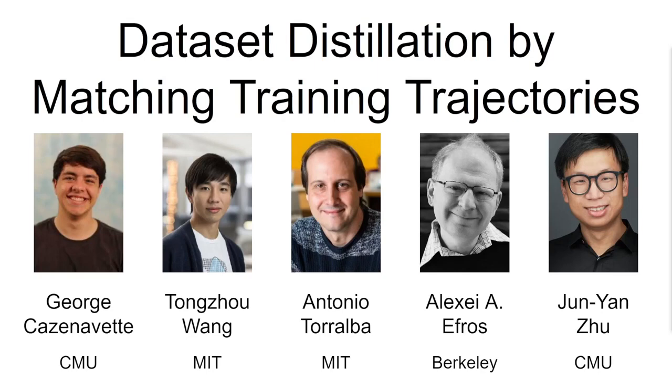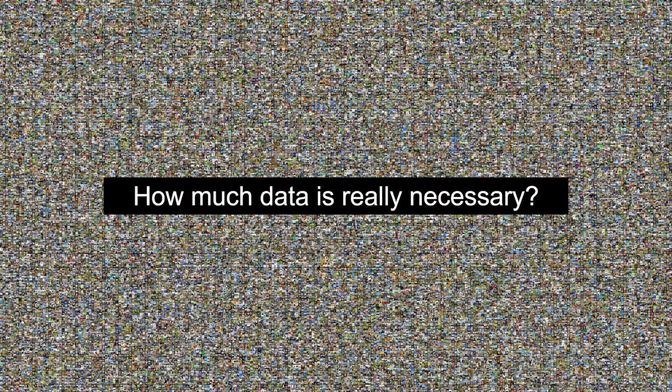We present dataset distillation by matching training trajectories, a new state-of-the-art method for creating small synthetic datasets. Datasets for computer vision are typically of massive scale, often having up to tens of thousands of images per class. But how much of all this data is truly necessary? Surely there are redundancies in the samples and ways to compress such large datasets.